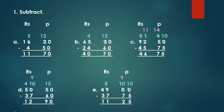16 rupees 20 paise minus 4 rupees 50 paise. There are 2 columns: rupees column and paise column. First, we will solve the paise column. 0 minus 0 is equal to 0. Children, we cannot subtract 5 from 2, so we borrow. The 6 becomes 5 and the 2 becomes 12. 12 minus 5 equals 7. 5 minus 4 equals 1. And there is no number below 1, so 1 will come down as it is. So the answer is 11 rupees 70 paise.